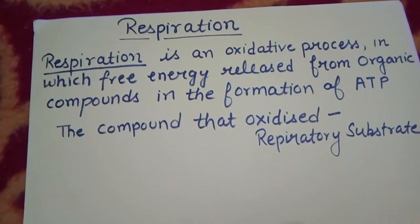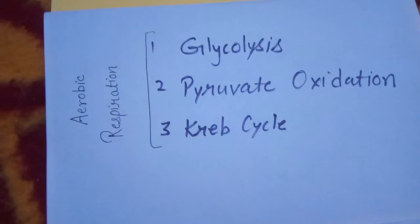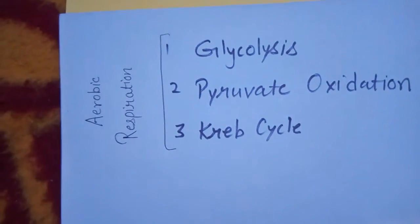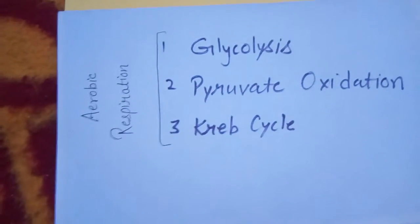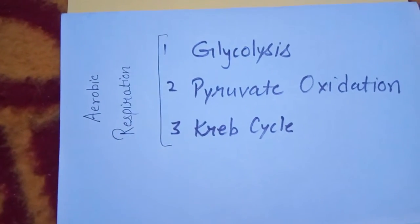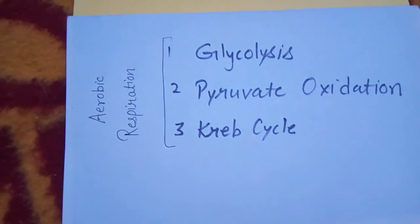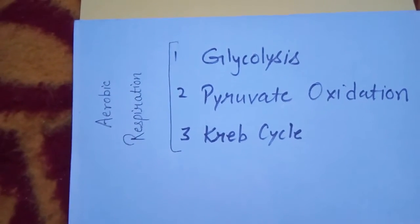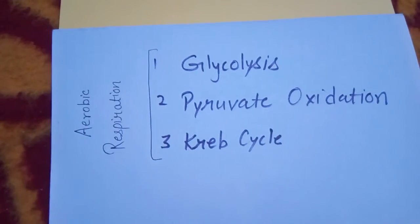Anaerobic respiration occurs in the absence of oxygen. There are three major components of aerobic respiration: first is glycolysis, second is pyruvate oxidation, and third is the Krebs cycle. These three are all interconnected, and we will discuss how they are interconnected in this video.